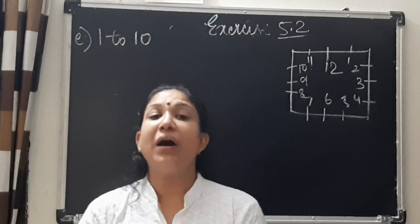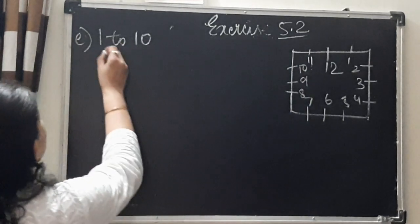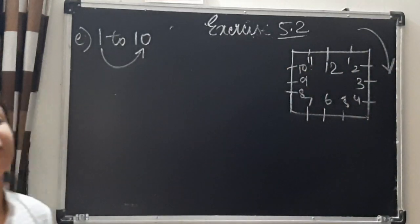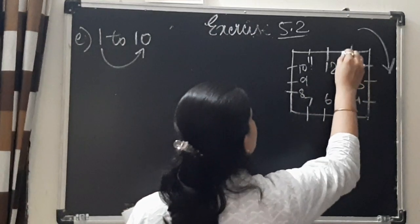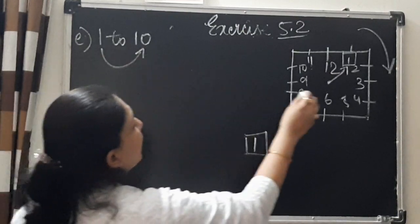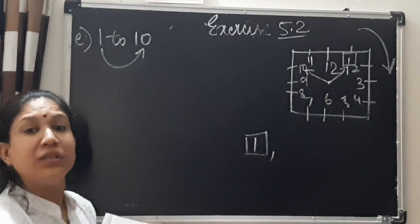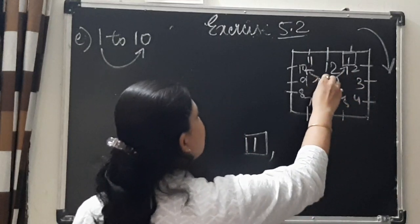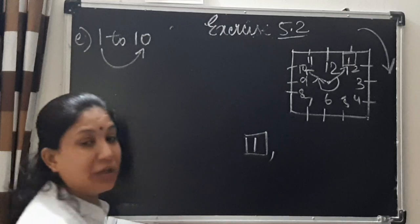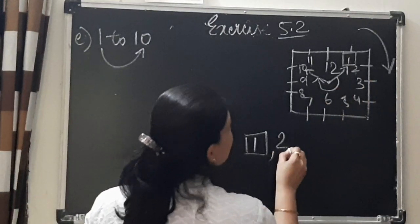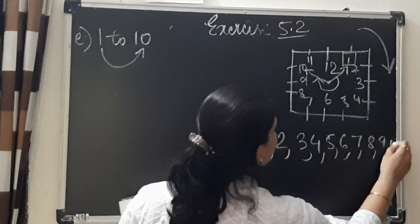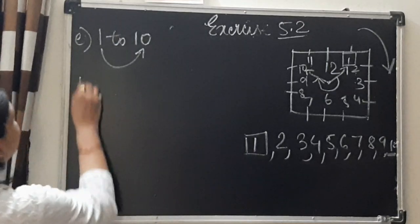Now see part E of the first question. They say if the hour hand is at 1 and turns through 10 in clockwise direction, what will be the fraction of revolution? Where is 1? Here. The hand starts at 1. We want to reach 10 in clockwise direction. Starting from 1 clockwise, it will point to 2, then 3, 4, 5, 6, 7, 8, 9, and finally reach 10.